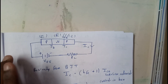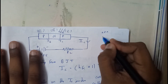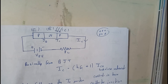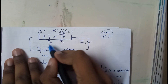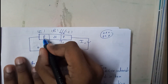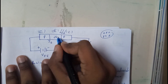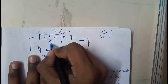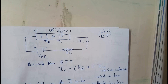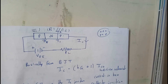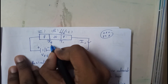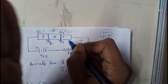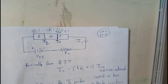A BJT comes in two forms: NPN and PNP. In this example, we are using PNP type. So we have a PNP structure — P-N and N-P — which can be assumed as two diodes. Each diode has a junction between two differently doped semiconductor regions. This gives us junction JE (emitter junction) and junction JC (collector junction). The order is always emitter, base, collector.